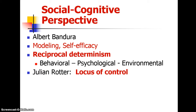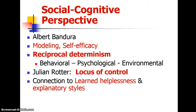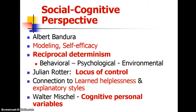Rotter's idea of locus of control: internal means you're in charge — it's your fault, good or bad; external means it's fate, destiny, or somebody else's doing. Know the connection between those and learned helplessness, and the explanatory styles of optimistic and pessimistic. Walter Mischel's cognitive personal variables — there are five of those, which we applied to Batman and to yourself. There's an acronym for them, but look back in your notes as the list got cut off on the slides.